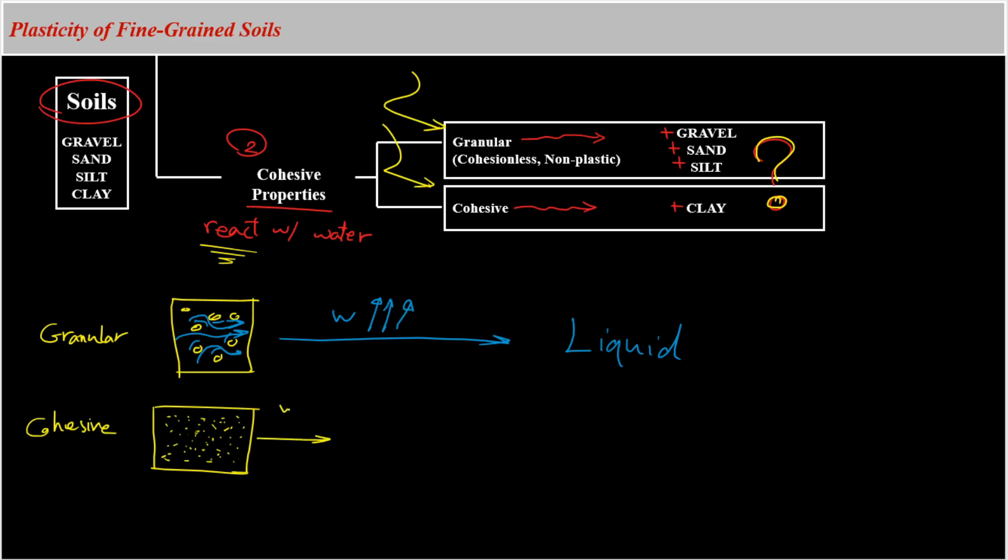Meaning that increasing the moisture content first changes the soil from solid to something like a mud or a plastic, and then increasing it more turns the sample to a liquid phase. So this unique property in clay soils or cohesive soils, which are fine grained soils, is called plasticity.